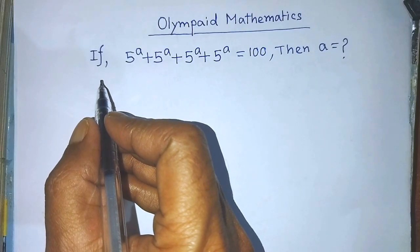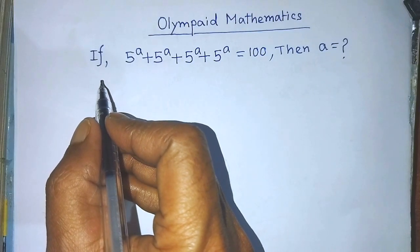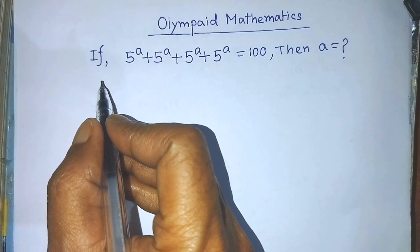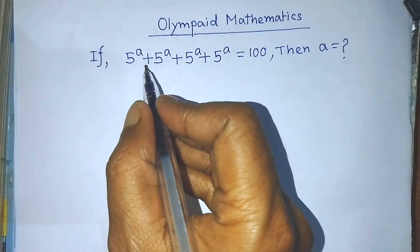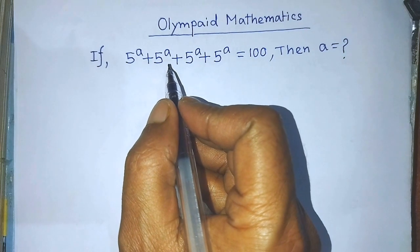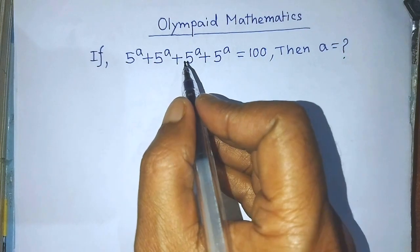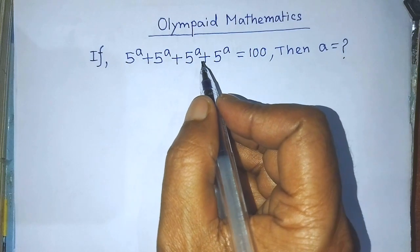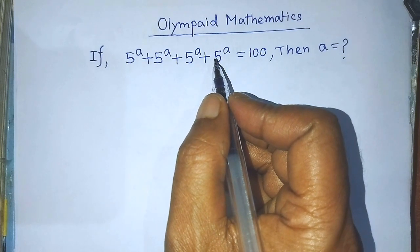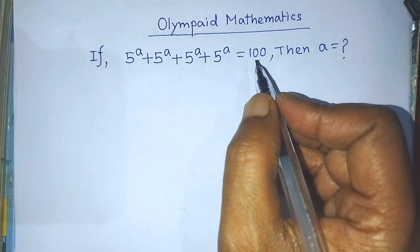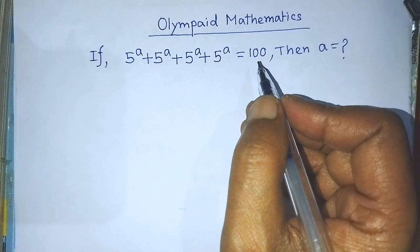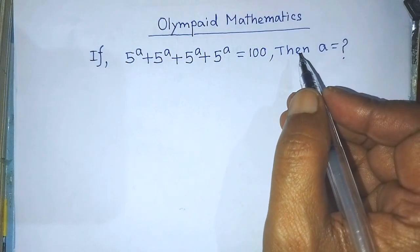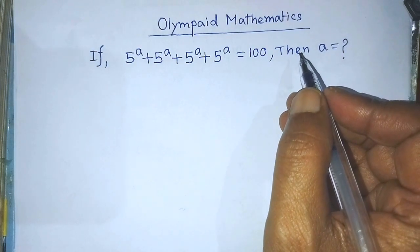Hi guys, welcome back to my channel, Alim Masplog. Today our question is: if 5 to the power A plus 5 to the power A plus 5 to the power A plus 5 to the power A is equal to 100, then find the value of A.